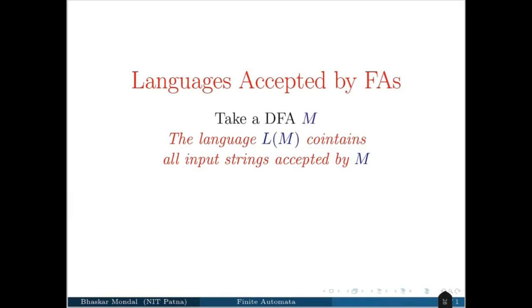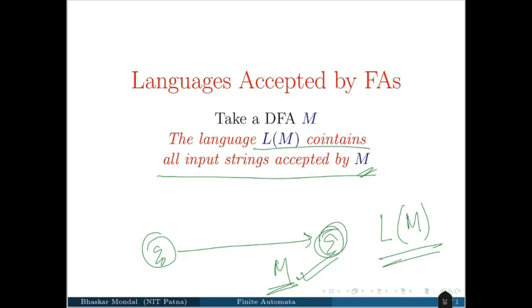Language is accepted by finite automata. Think about finite automata M. The language of M contains all input strings accepted by M. What is M? M is some transition diagram. So whatever string is going to be accepted by this M, if you collect all the strings in a set, that is going to be called a language. Then that language is defined by this finite automata, and we write it like L of M. What is L of M? It is a language whose each string is accepted by a finite automata M. So L of M equals strings that drive into final state.